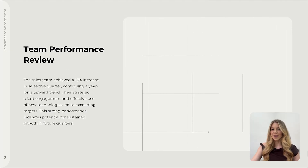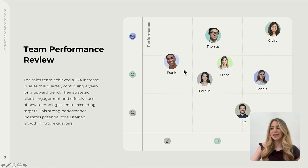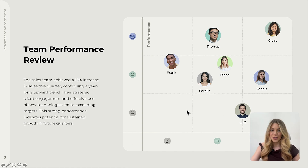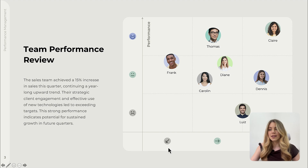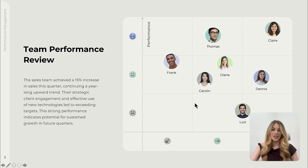Now let's move on to performance management for entire teams. This slide shows how you can plot team performance on a chart, with performance on the y-axis and trend on the x-axis. This helps in visualizing overall team performance and its trajectory. On the y-axis, performance ranges from bad to great, and on the x-axis, the trend shows whether performance is going down, is steady, or is actually improving. You can plot different team members based on these two criteria.